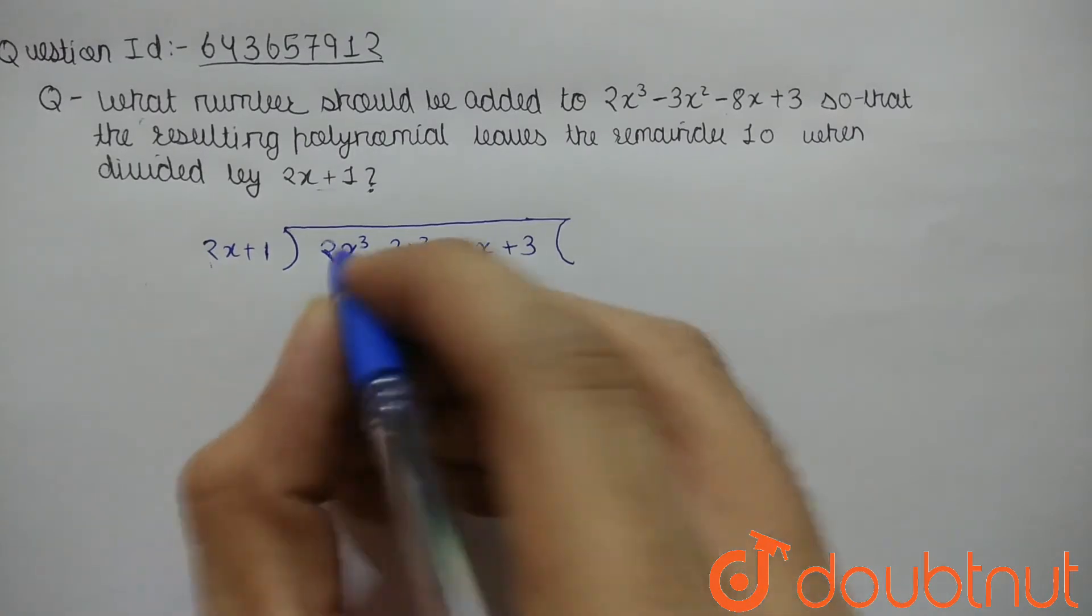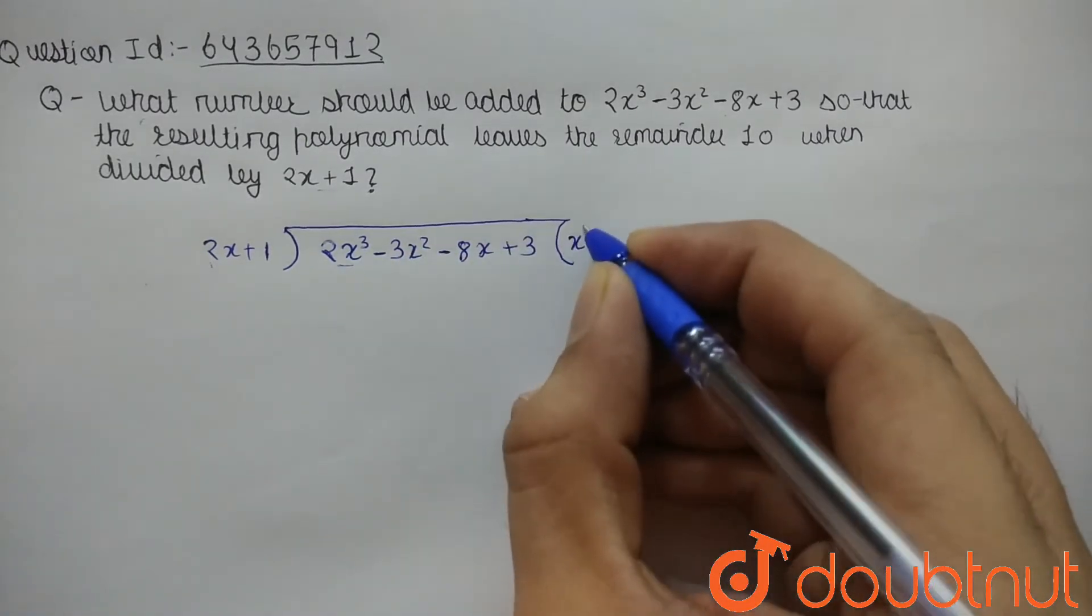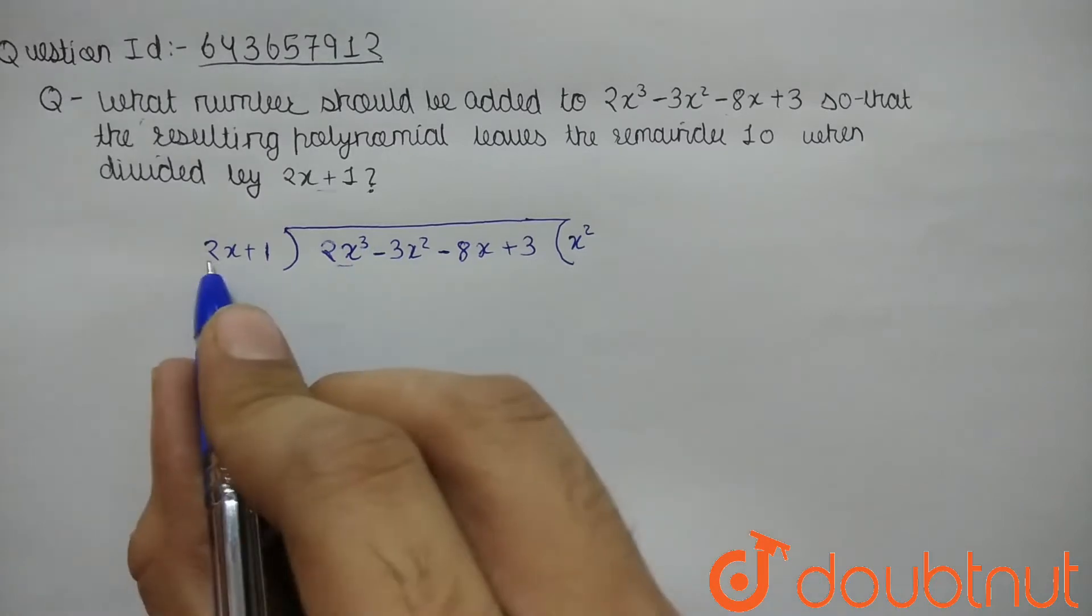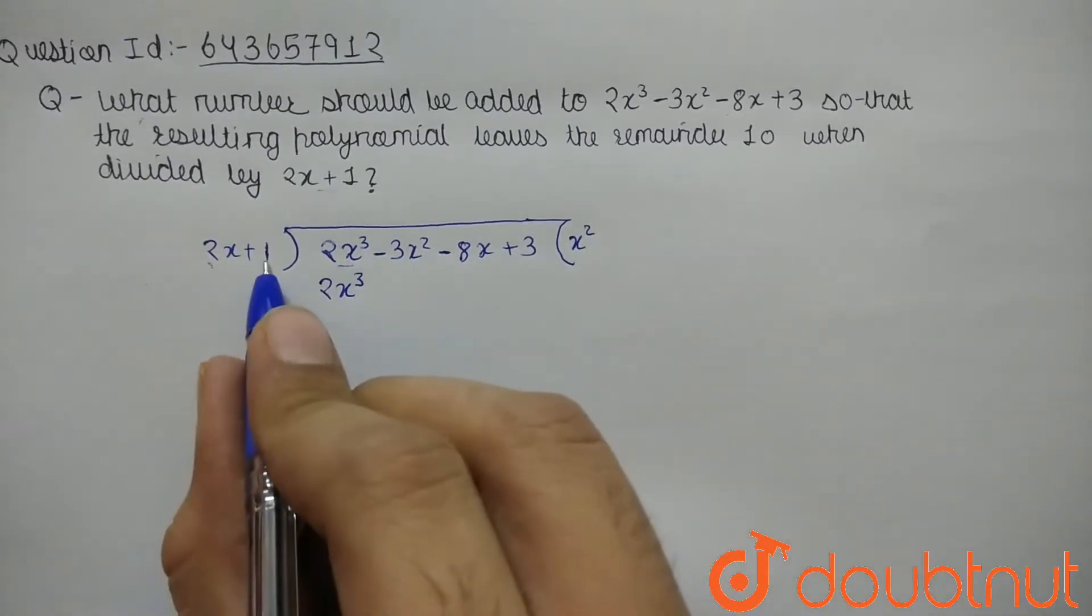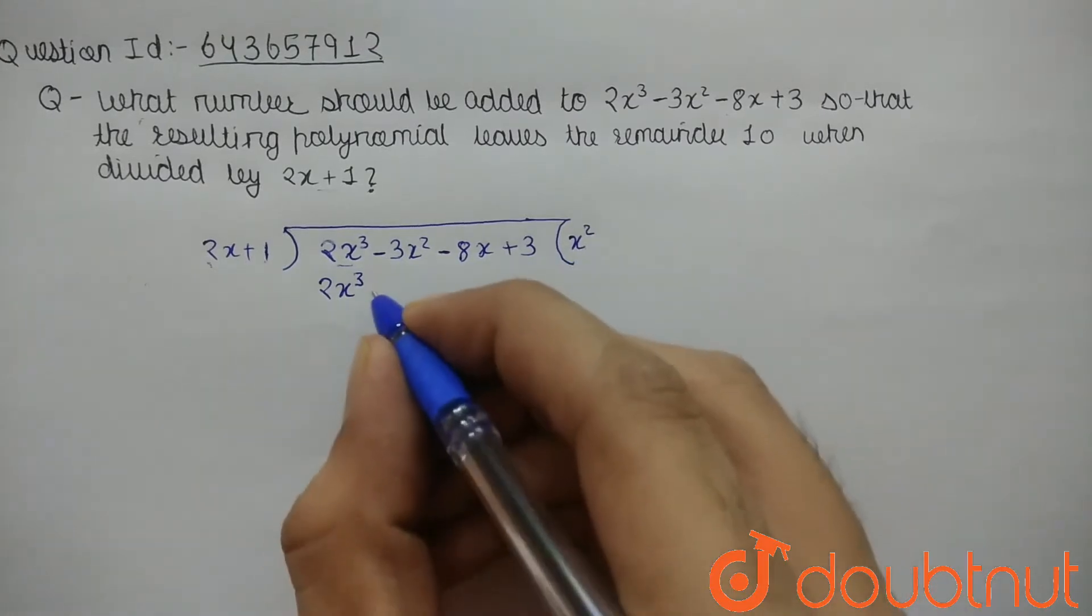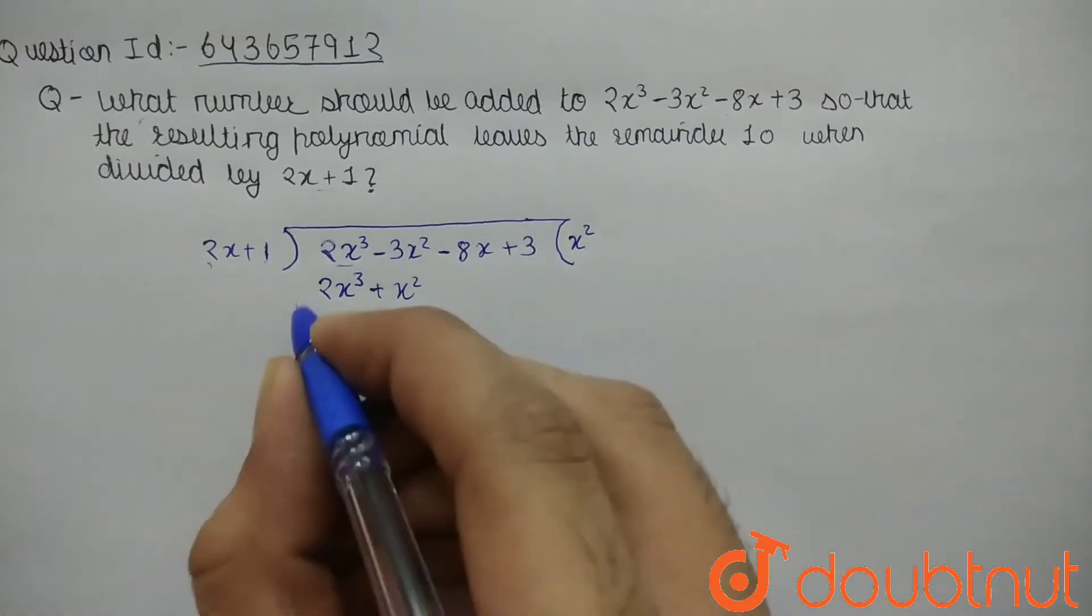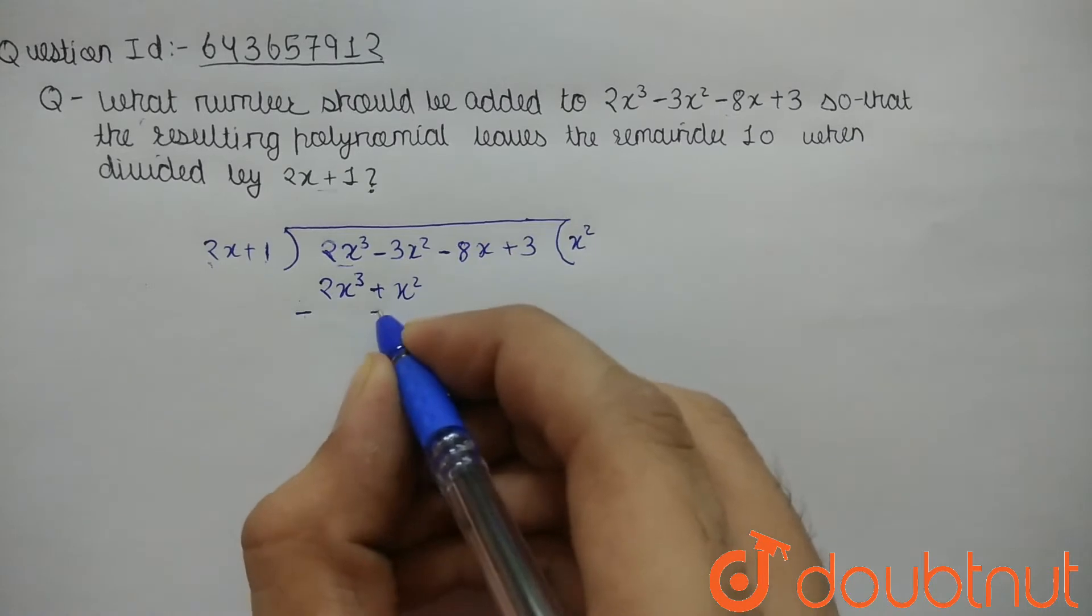cancelled out. -3 - x² is -4x², -8x + 3. Now what you need to multiply to make 2x minus 4x²? It will be -2x. 2x into -2x is -4x², so -4x². Then 1 into -2x is -2x. Sign will be changed.